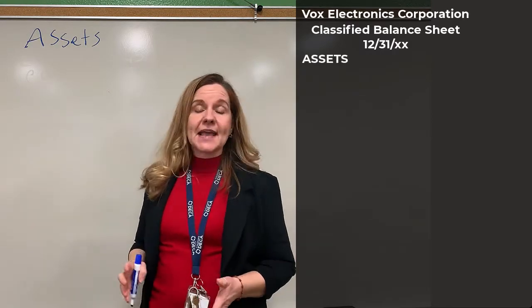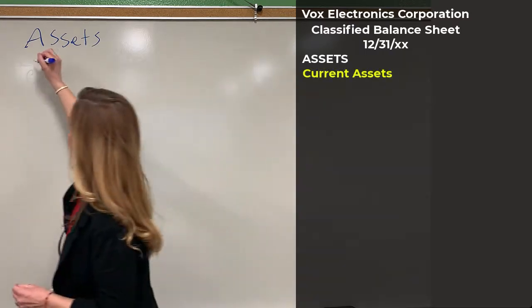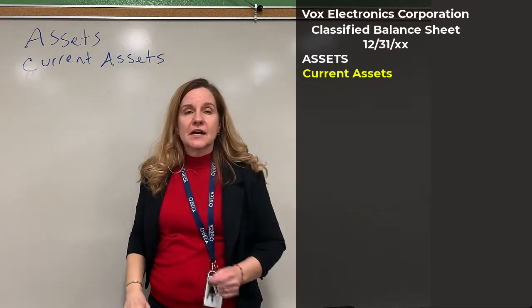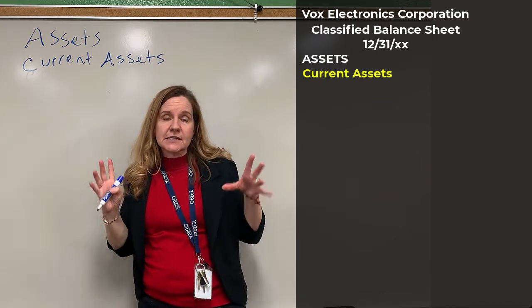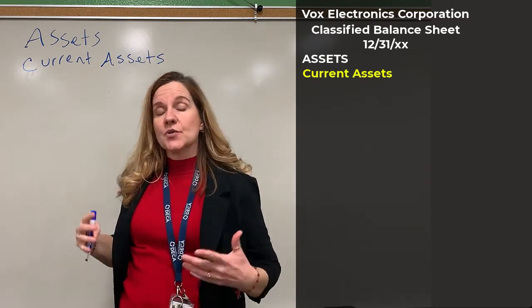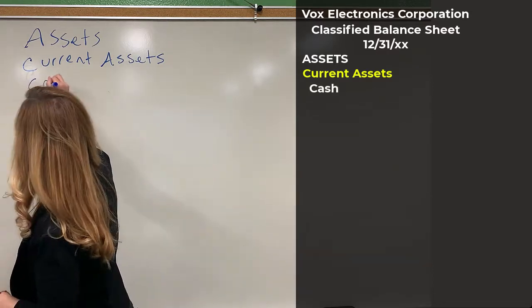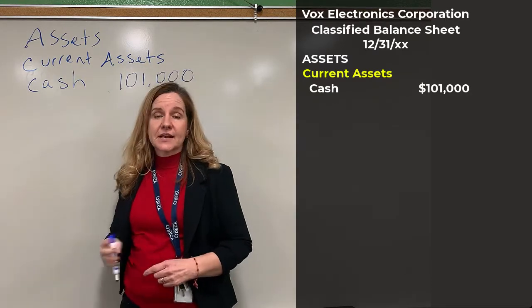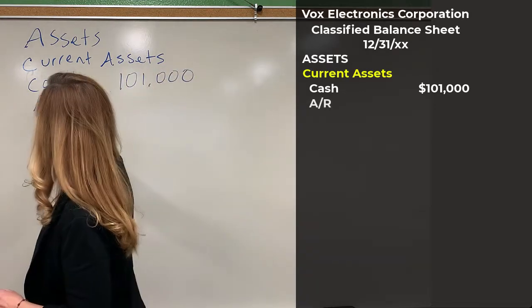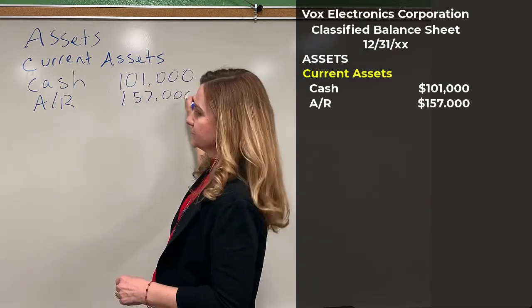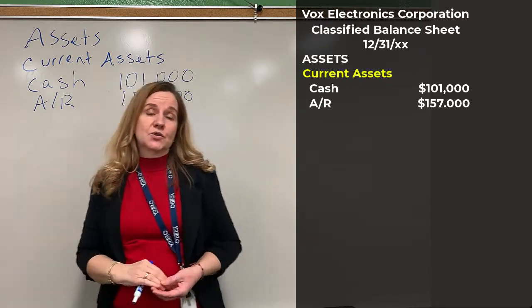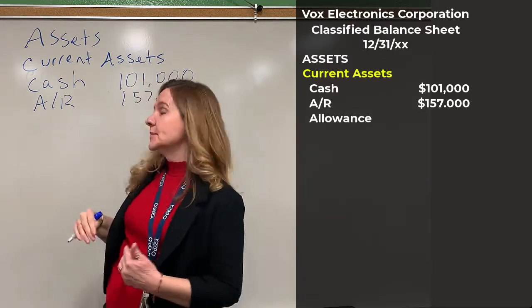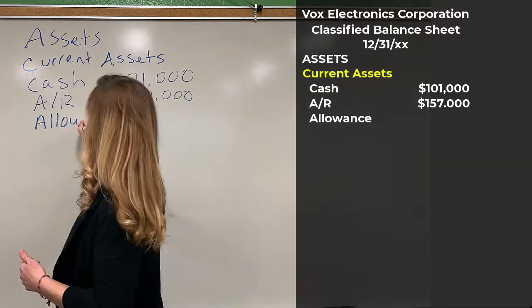We start with assets, and the first category we're going to put down are the current assets. I'm putting a header for current assets. We put these usually in the order of liquidity, and liquidity is how fast something can convert to cash. So the most liquid asset of course is cash, and cash is listed first. Our cash is $101,000. Then the next asset we list is accounts receivable for $157,000. Below accounts receivable is its contra account — allowance for doubtful accounts, sometimes called allowance for bad debts — and it's listed right under the parent account, which is accounts receivable.